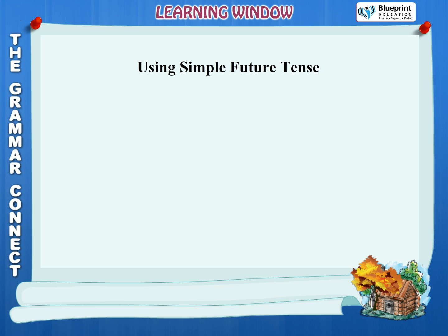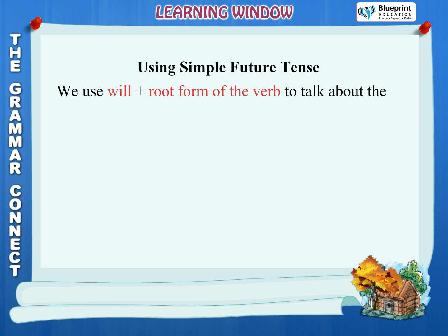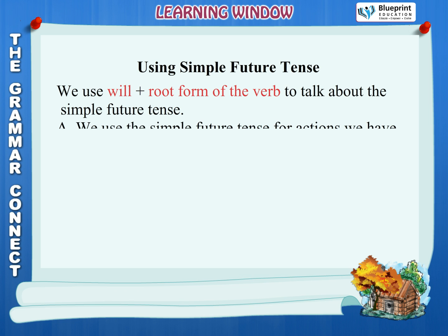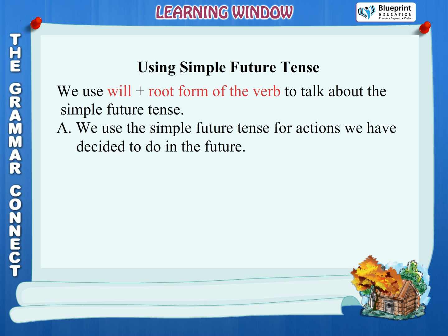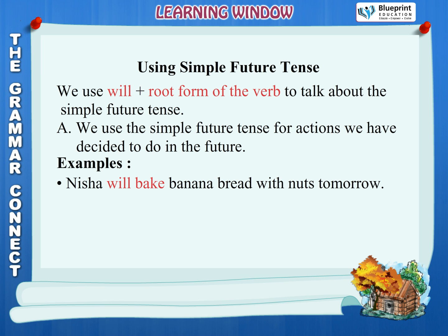We use 'will' plus the root form of the verb to talk about the Simple Future Tense. A. We use the Simple Future Tense for actions we have decided to do in the future. Examples: Nisha will bake banana bread with nuts tomorrow. I will play cricket after lunch.